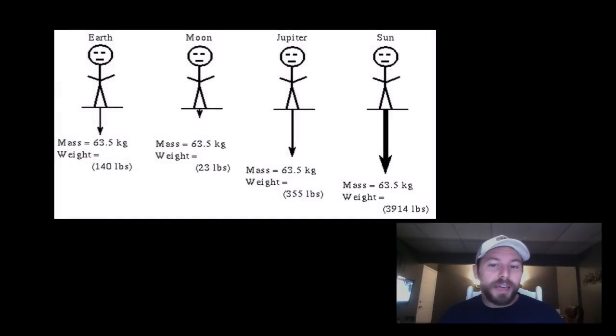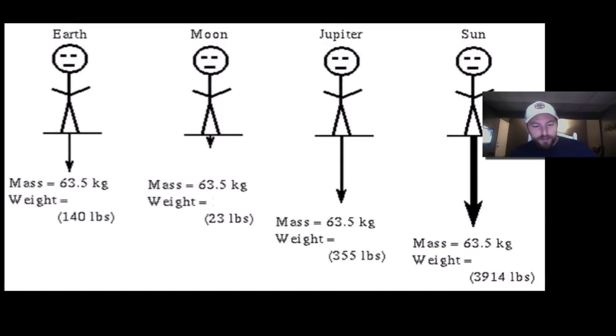This is just looking at a few different places around our solar system. So here on Earth, our mass is about 63.5 kilograms, which is approximately 140 pounds. Basically, take this number and multiply it by two. It's the simplest way. So someone who weighs 140 pounds here on Earth, if you take them, bring them to the Moon, they weigh less.